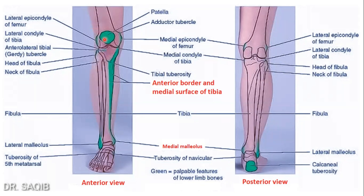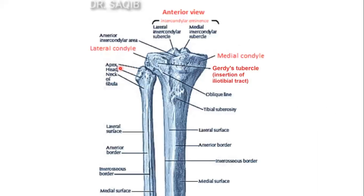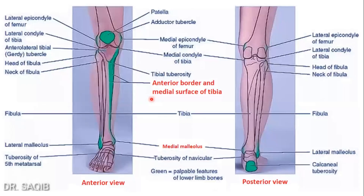You can see the subcutaneous areas of these two bones, already discussed with the tibia — this is the fibula. You can see this is the styloid process and the subcutaneous lateral malleolus. You see again the slender shaft of the fibula; the lateral bone of the leg is expanded above into a quadrilateral head and below into a flat malleolus. This is the head, and below is this malleolus. Here you can see this is the lateral malleolus, the flat one.